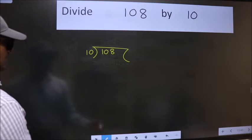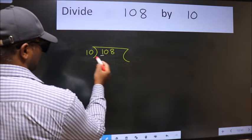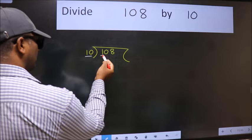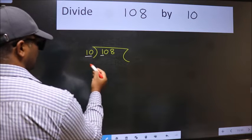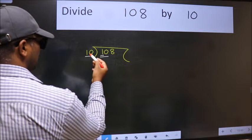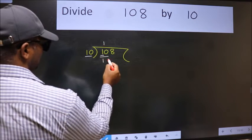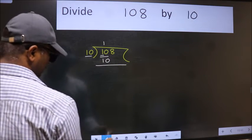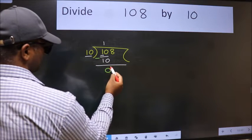Next, here we have 1 and here 10. 1 is smaller than 10, so take two numbers: 10. When do we get 10 in the 10 table? 10 once is 10. Now we should subtract. We get 0.